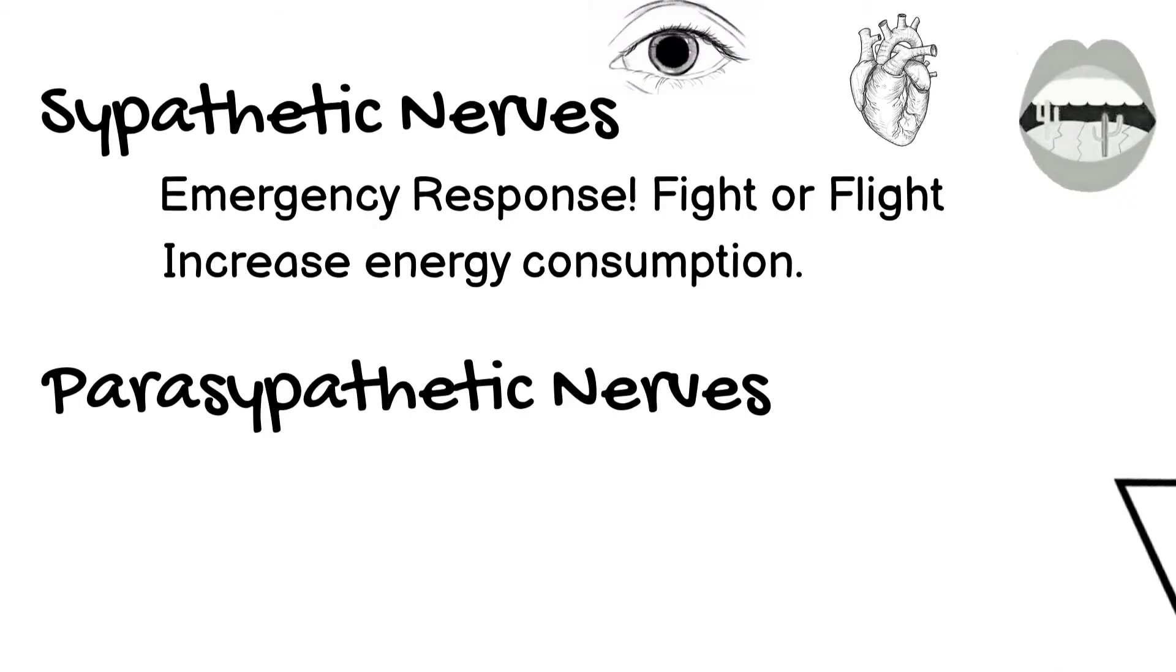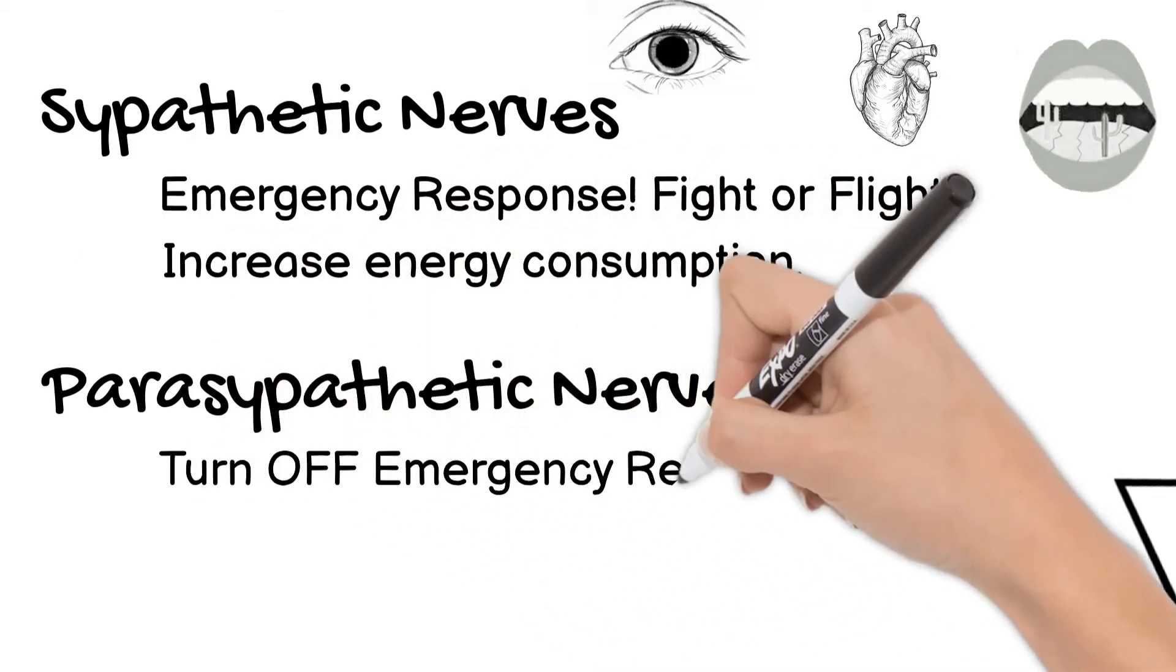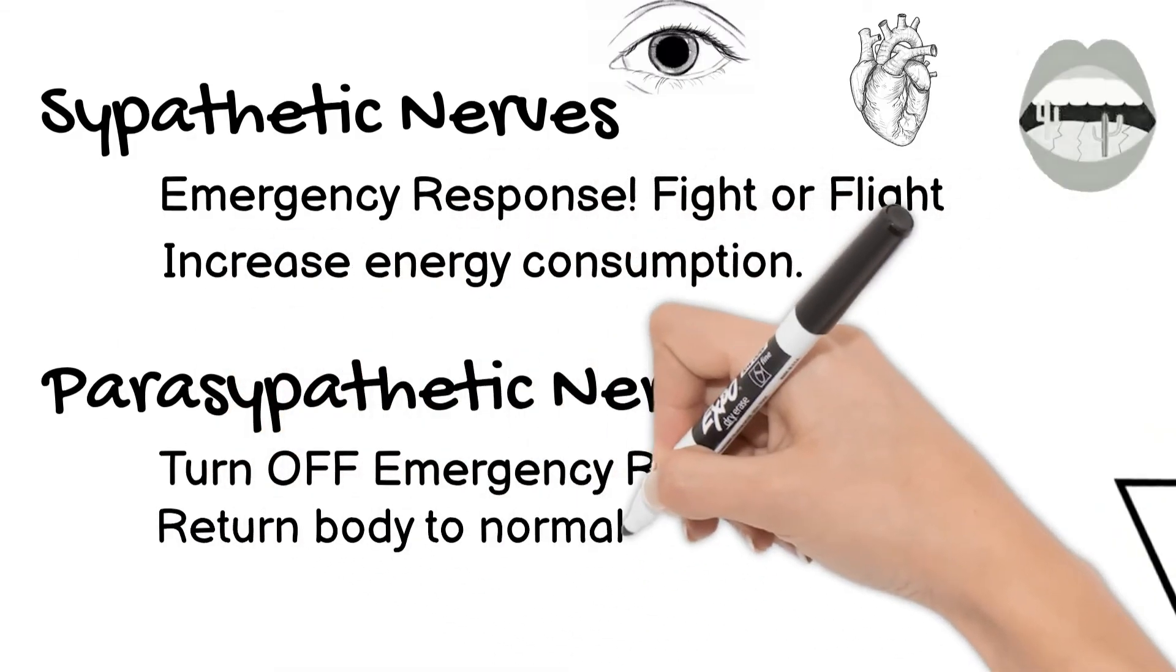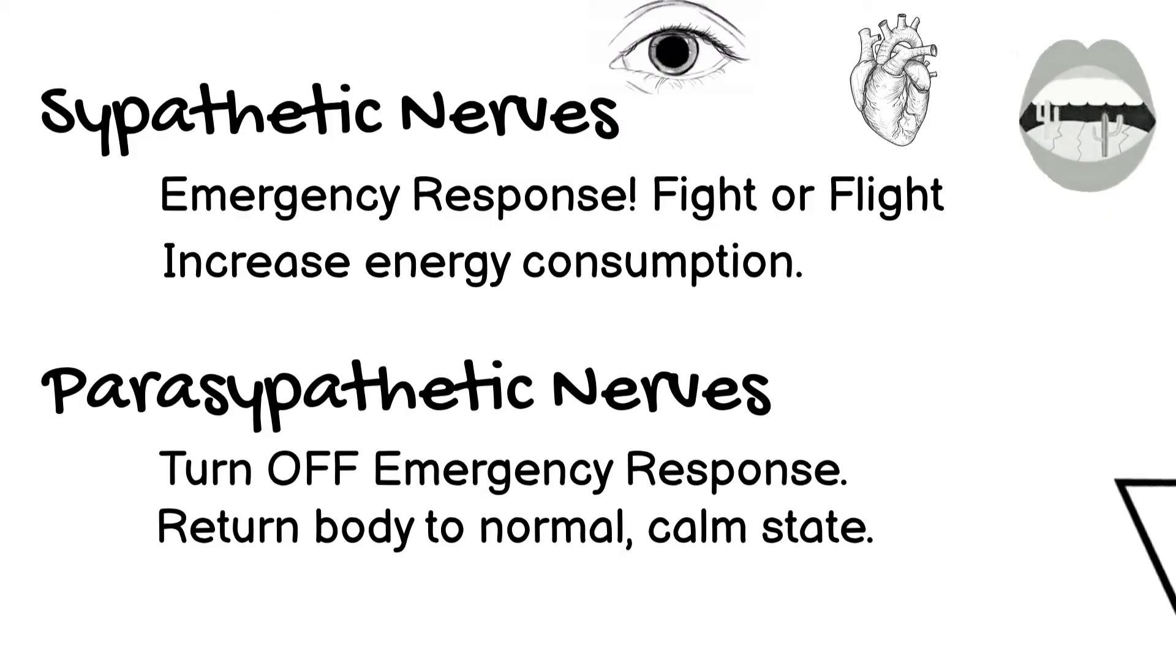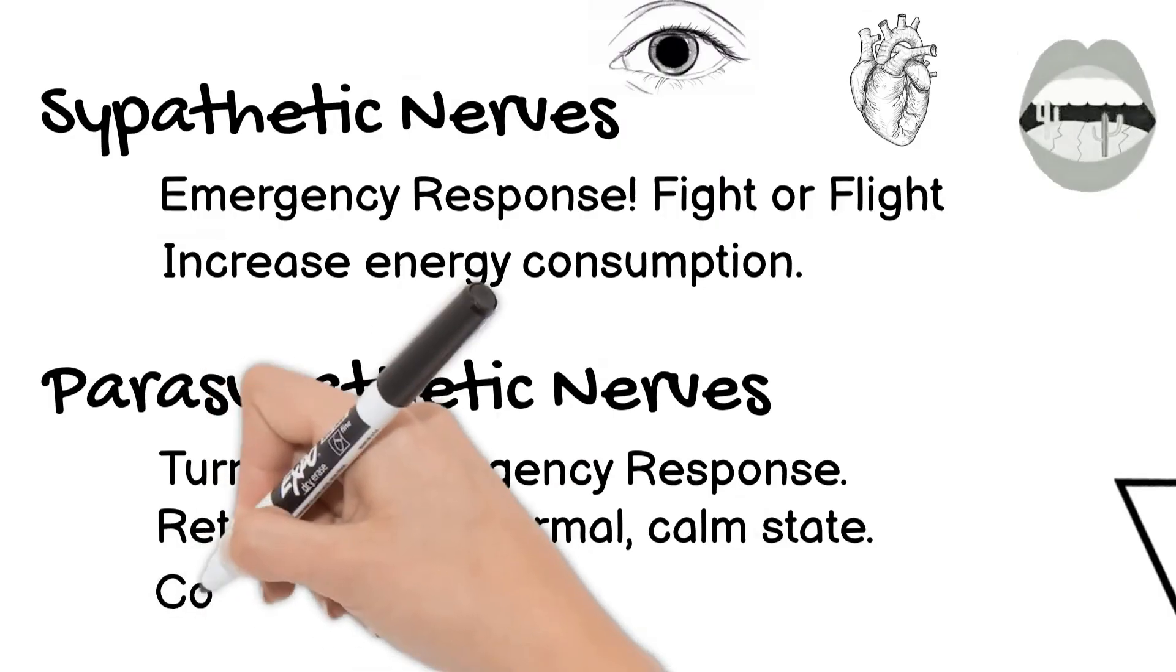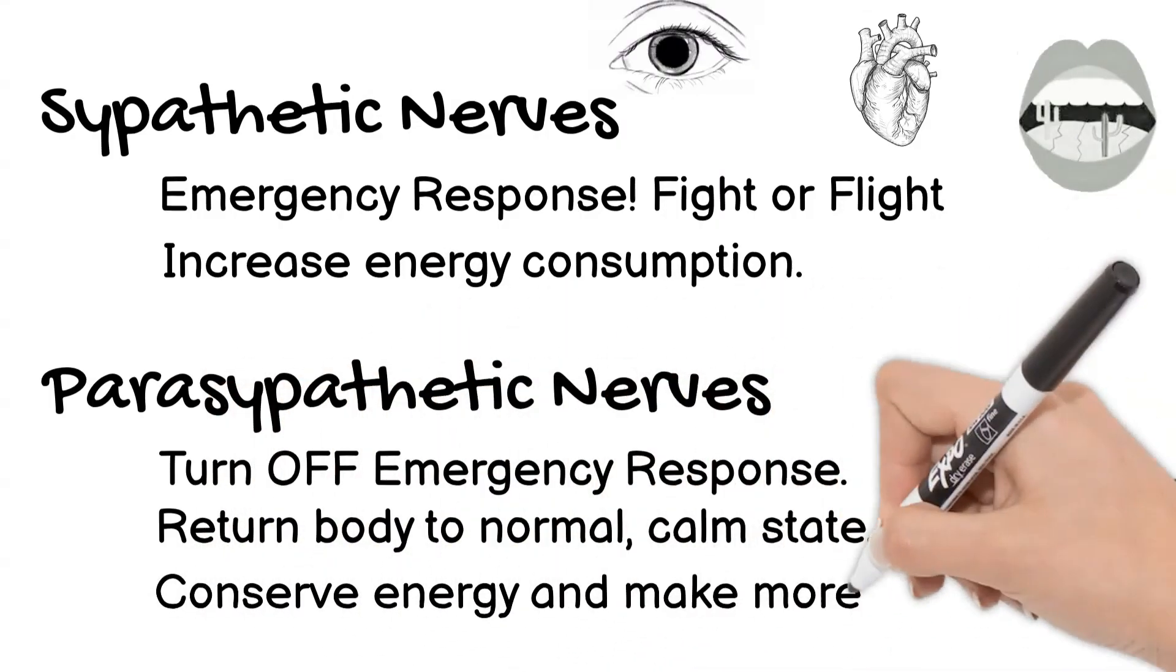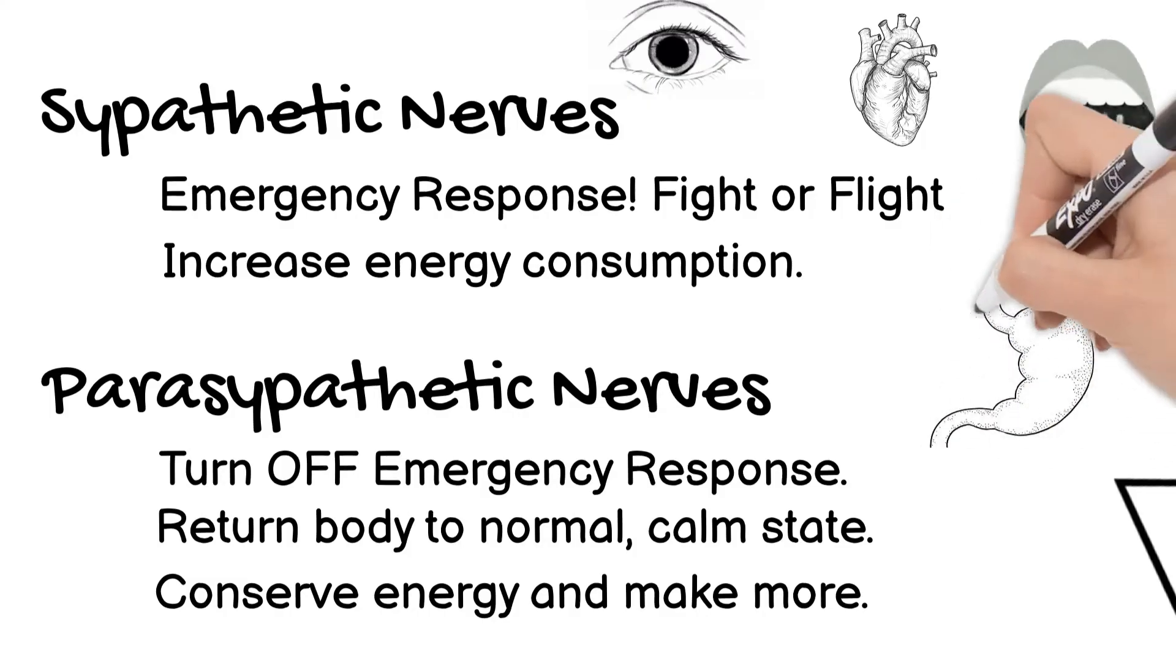Your parasympathetic nerves on the other hand turn off the emergency response and help your body return to a normal and calm state. It helps the body conserve energy and gain more through things like digesting food.